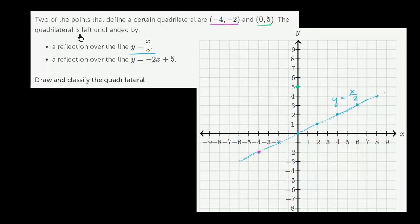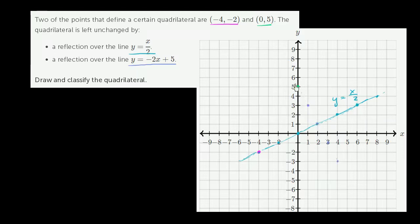The quadrilateral is also left unchanged by a reflection over the line y is equal to negative 2x plus 5. The y-intercept here is 5, so when x is 0, y is 5 — it goes through that point. The slope is negative 2, so every time we increase x by 1, we decrease y by 2. So the line looks something like this, going through that point and continuing. That is y is equal to negative 2x plus 5.